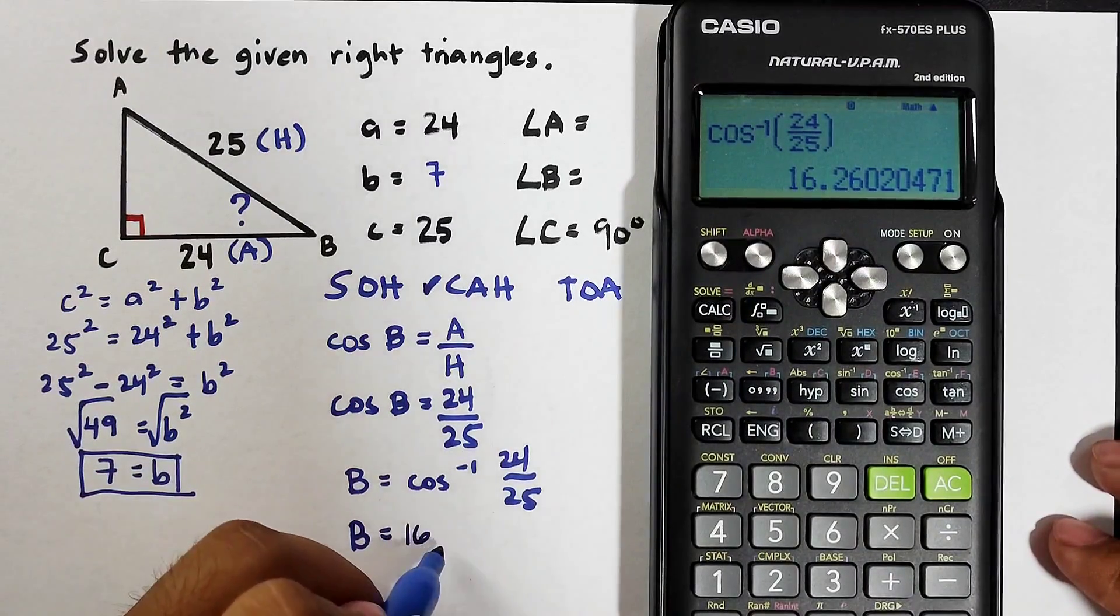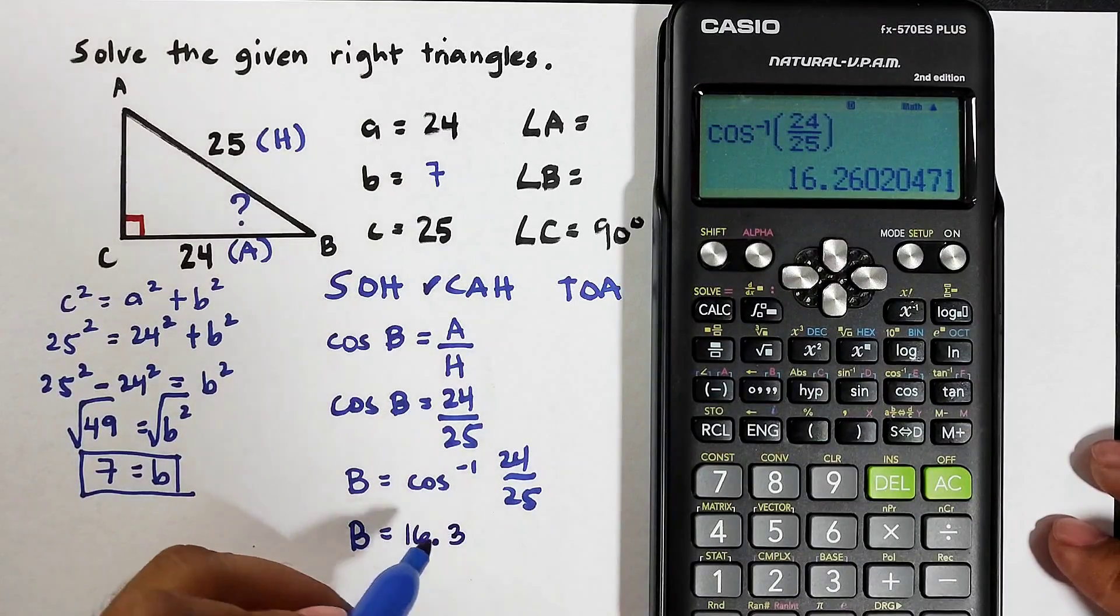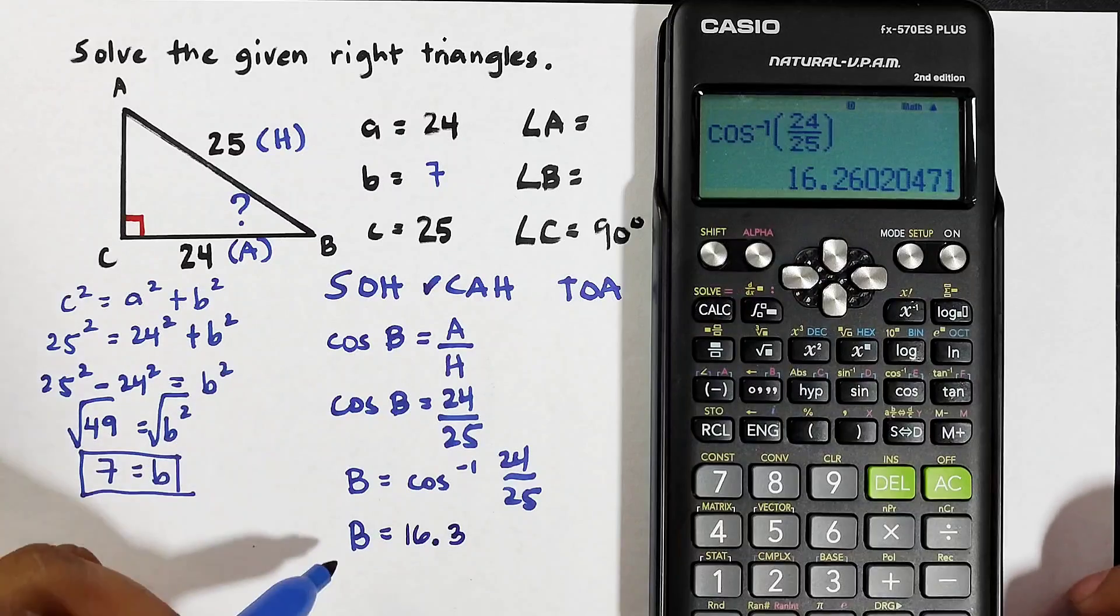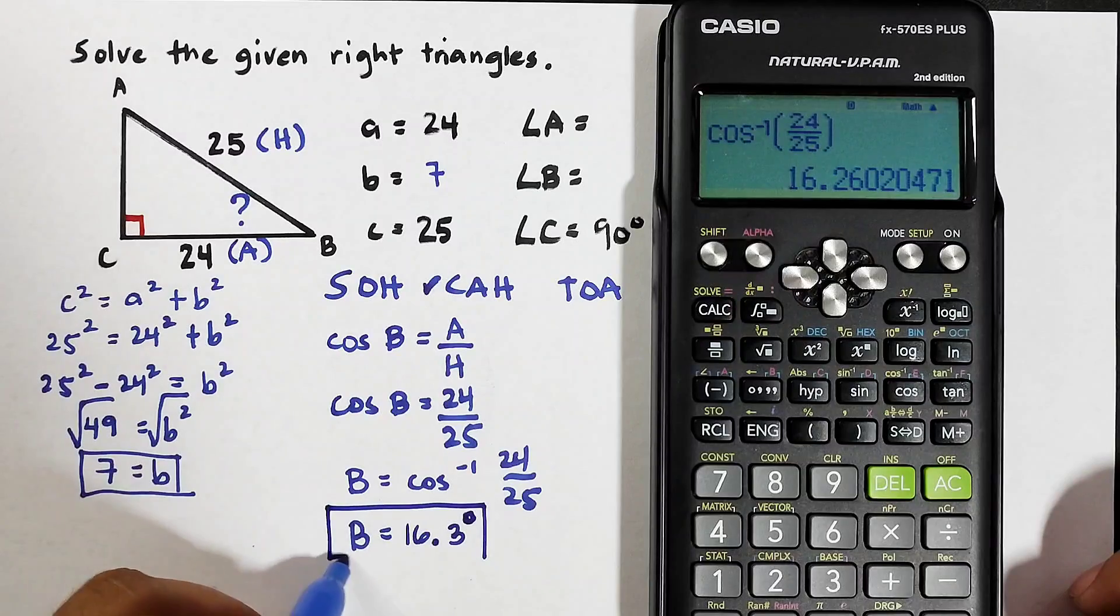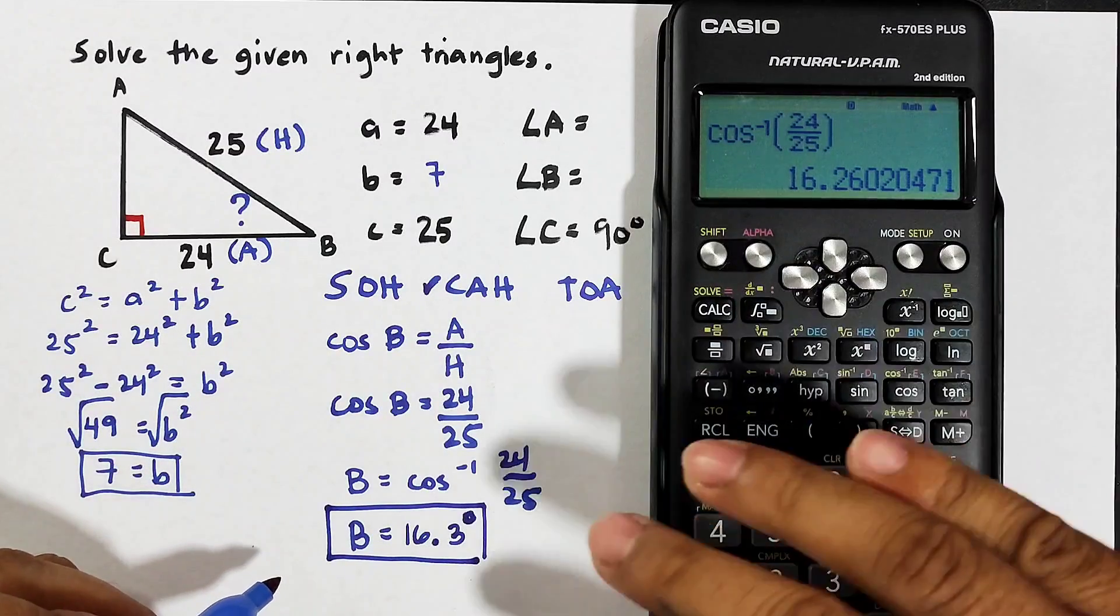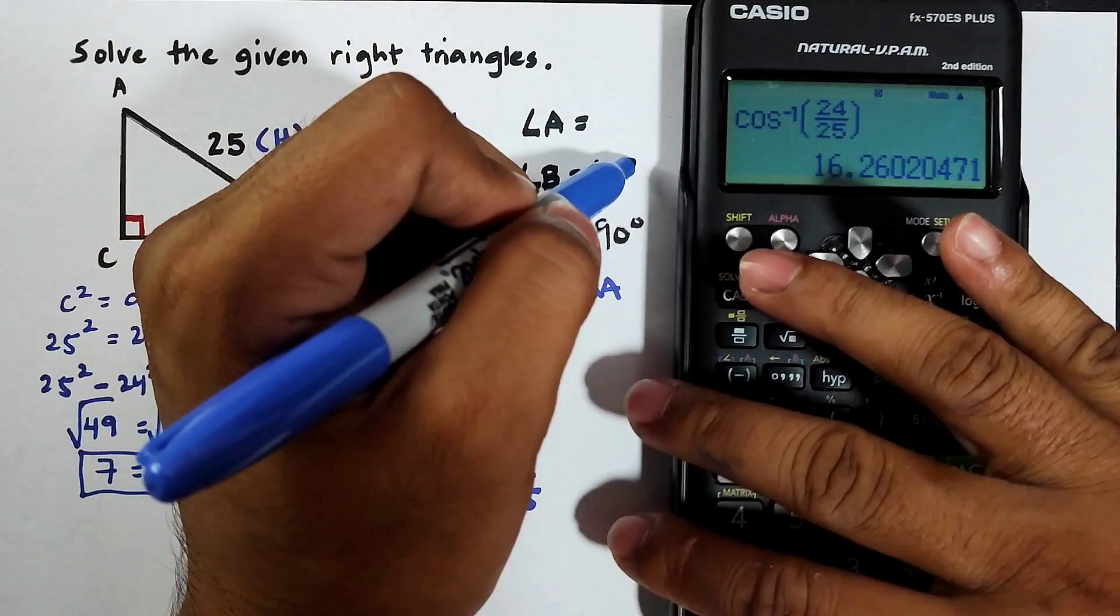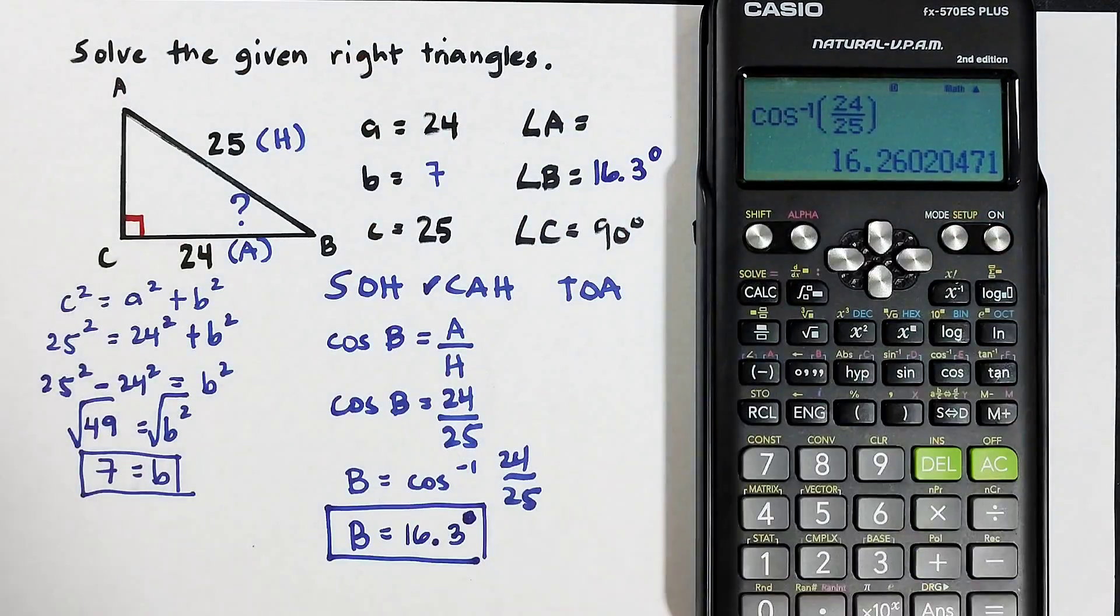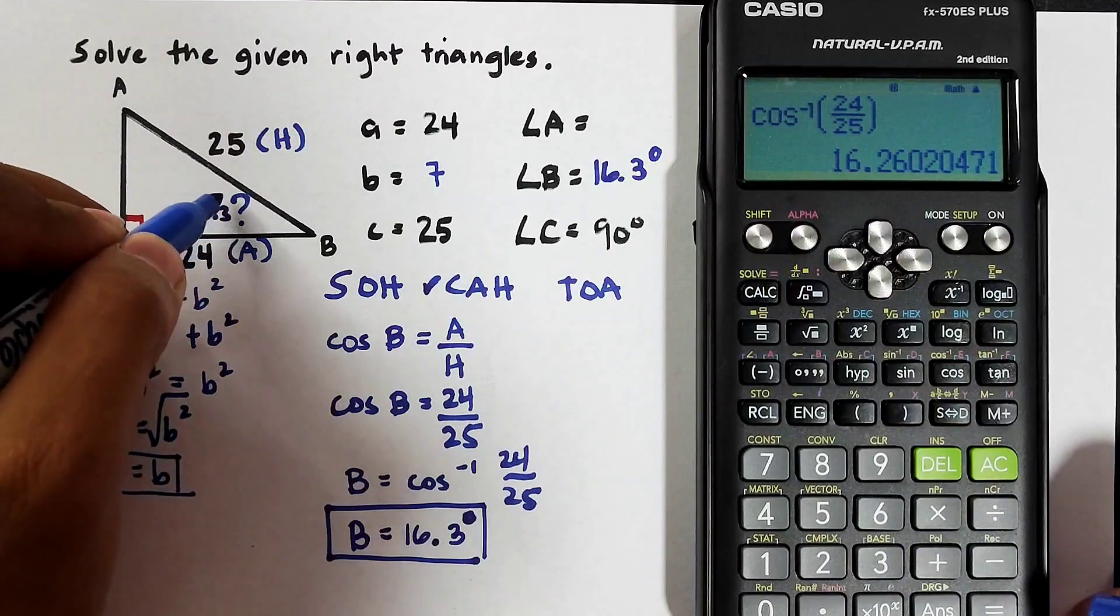But remember this is an angle, so we will put a degree here. And this is now the measurement of angle B. Angle B is 16.3 degrees. So as simple as that. Now guys, if this is 16.3 degrees, how are we going to solve for the angle A?